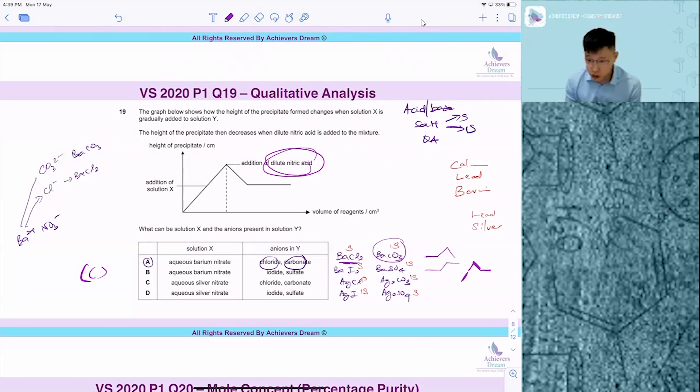Let's take a look at the last one, AgI, Ag2SO4. AgI is insoluble, go up. Then after that, Ag2SO4, nothing is insoluble. Then after that, when you add nitric acid, so nothing happened.